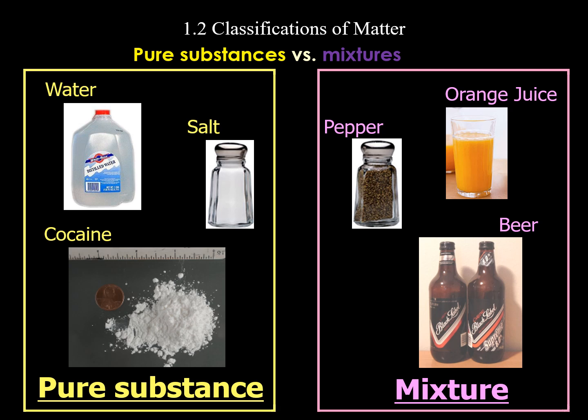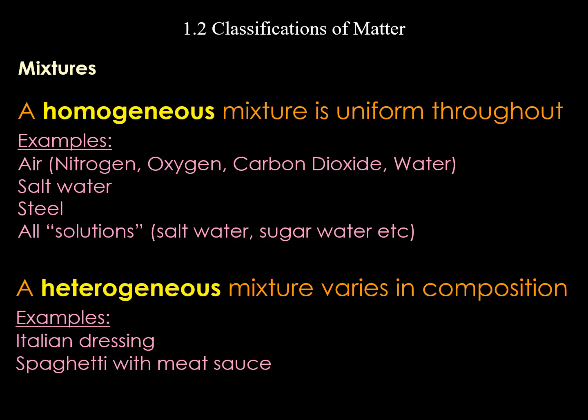Some examples of pure substances: water, NaCl salt. For mixtures: orange juice can be considered a mixture because it has the juice and the pulp; beer has the foam and the liquid; pepper — you can separate the different components out.